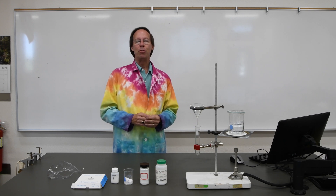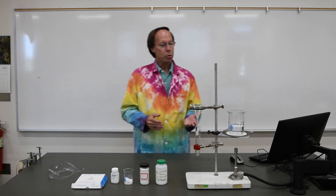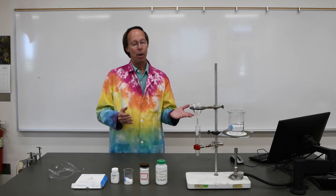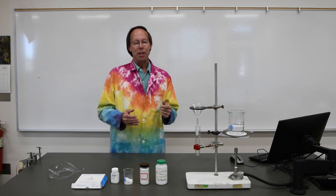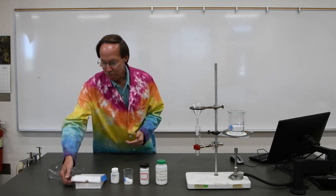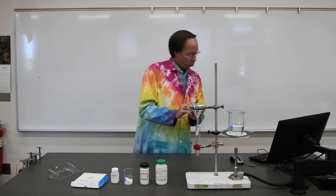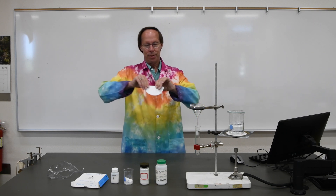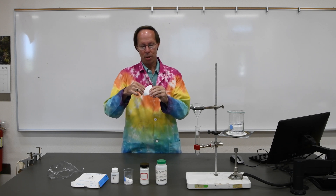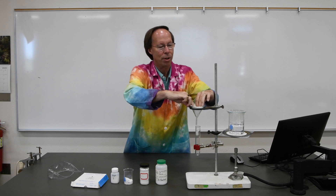Once we've determined the solubilities of each of these things, we should be able to separate our unknown mixture. We'll take the unknown in a test tube and first add some alcohol, swirl it around, and if the alcohol-soluble material is present, it should dissolve and leave the other two substances behind. To separate the alcohol-soluble substance, we're going to use a filter paper folded into quarters to make a cone that fits into our glass funnel.